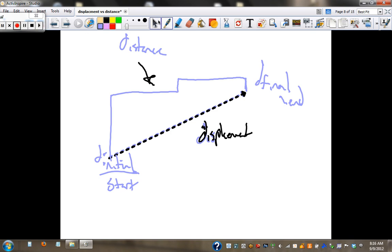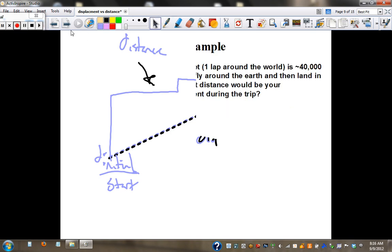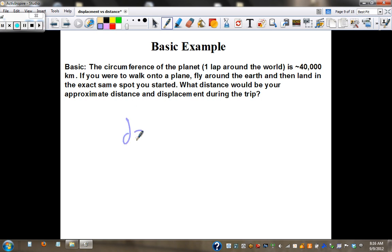Here's a question: solve for distance and displacement. If you travel around the world, there's about 40,000 kilometers—walk on a plane, fly around the planet, and land where you started. The distance is how far did you really go: 40,000 km. Displacement, start to finish, is zero. That's an example of the difference between the two.